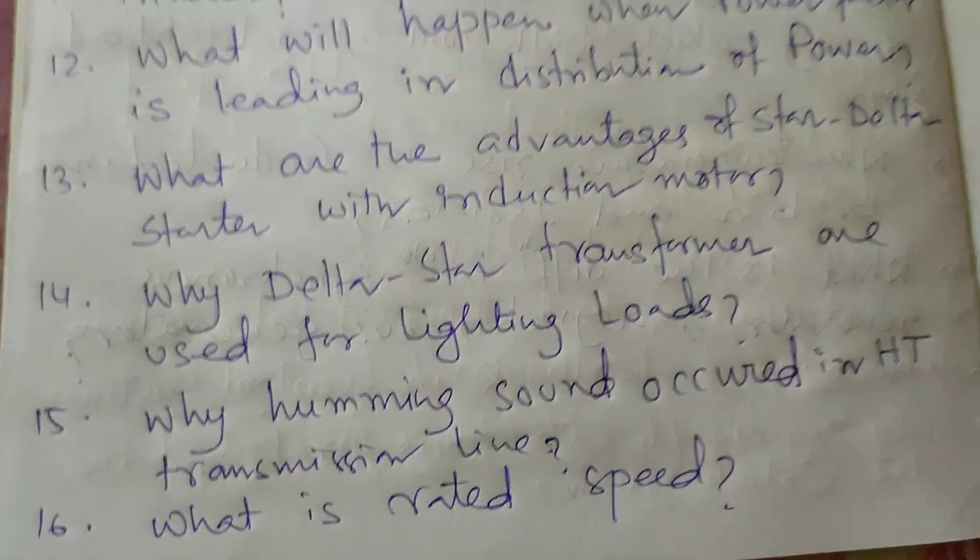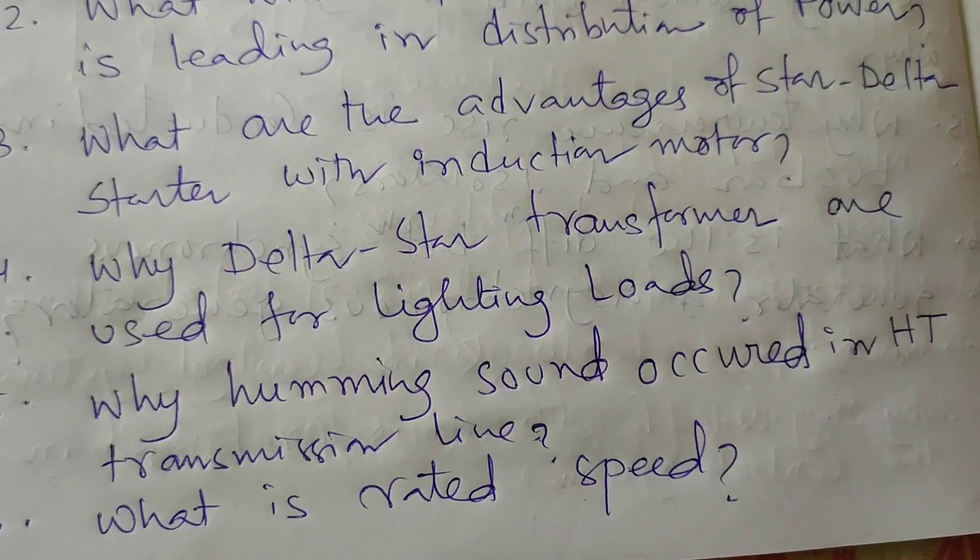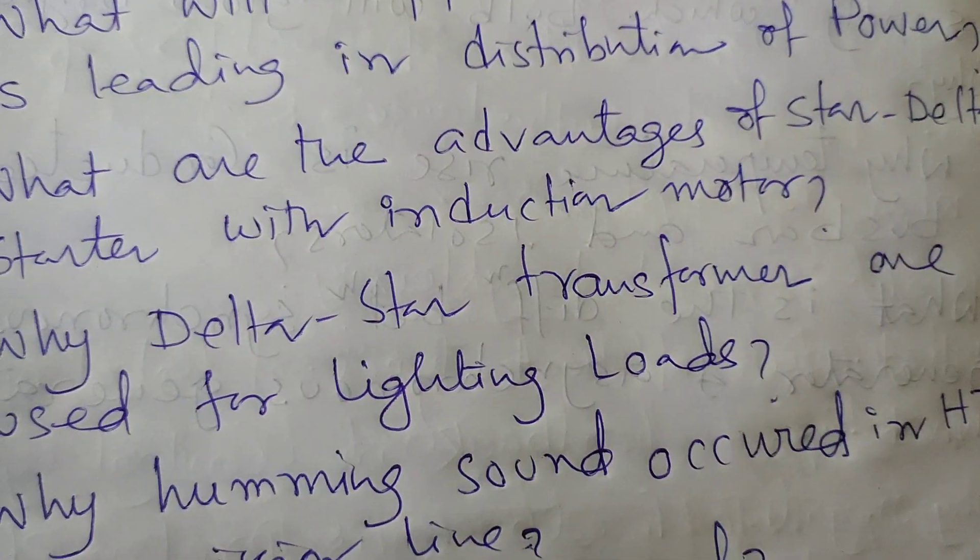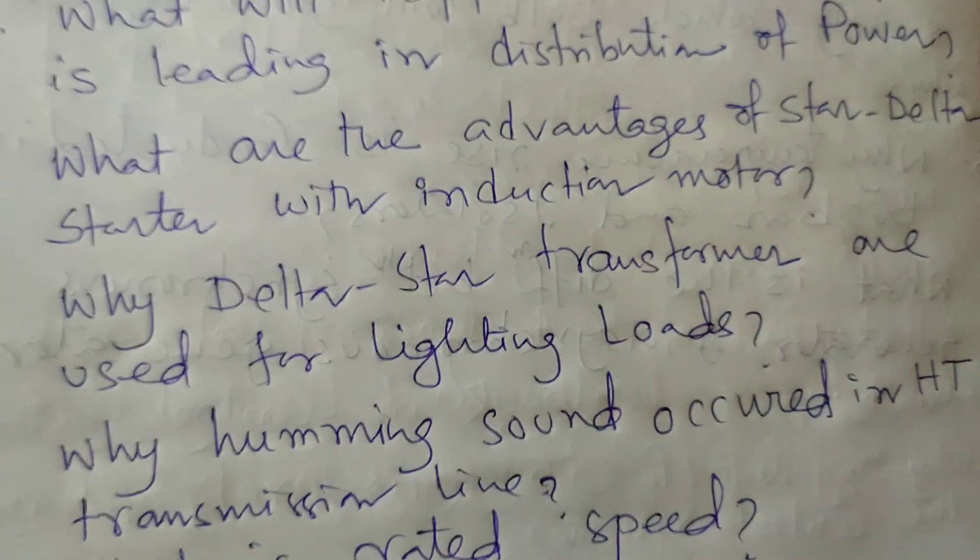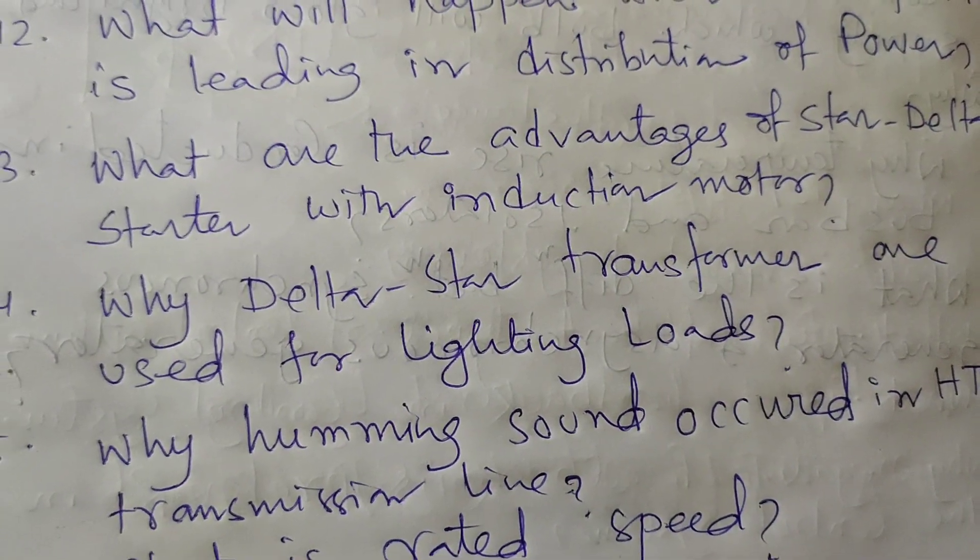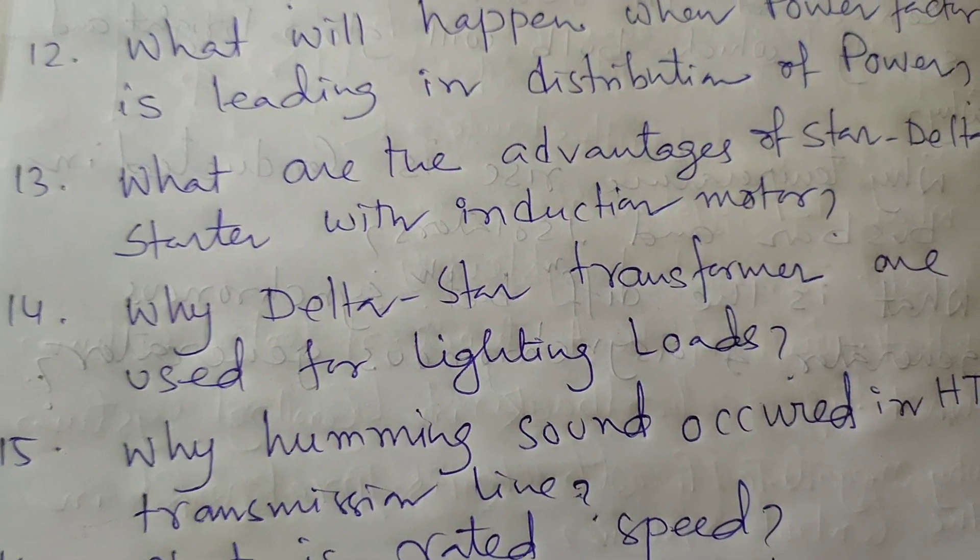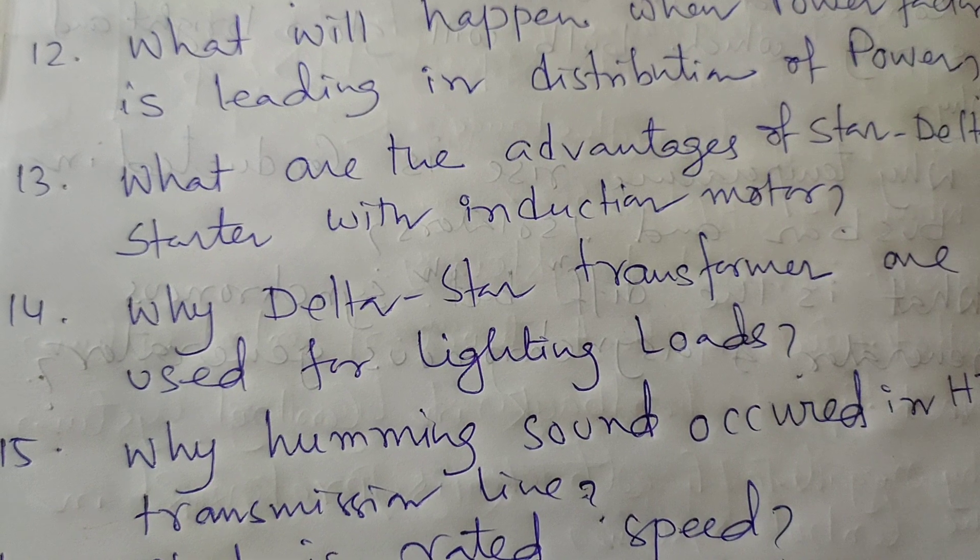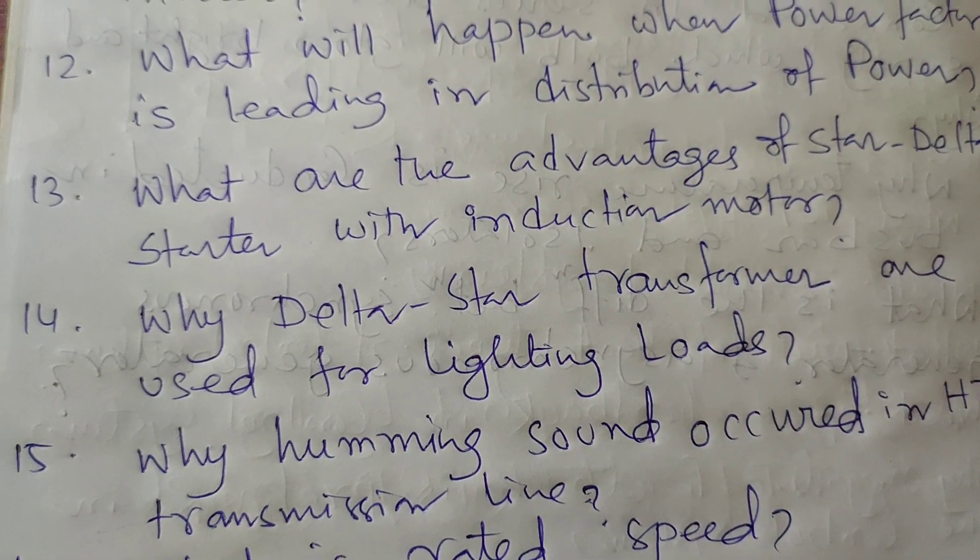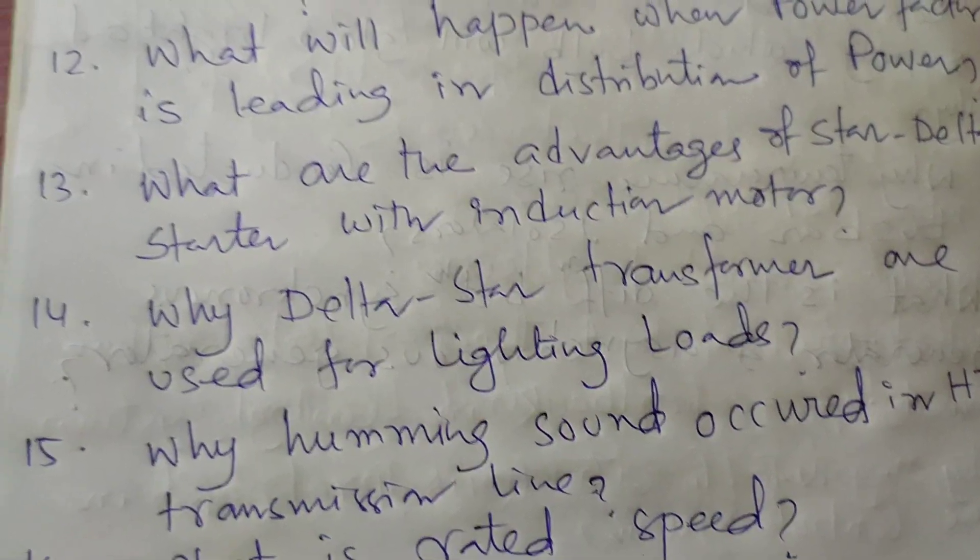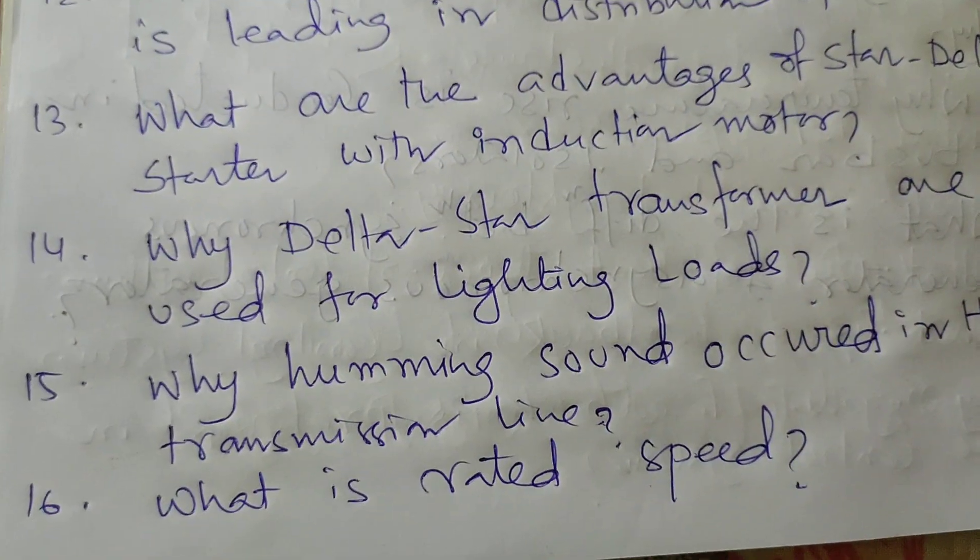Next question: Why does humming sound occur in transmission lines? The humming sound comes due to ionization of air around the transmission conductors. This effect is called the corona effect and it is considered as power loss in the line.